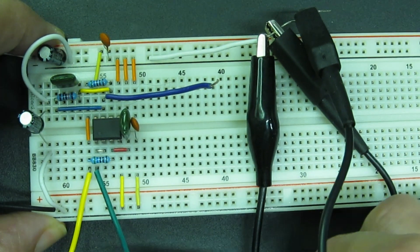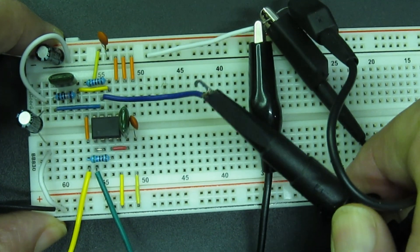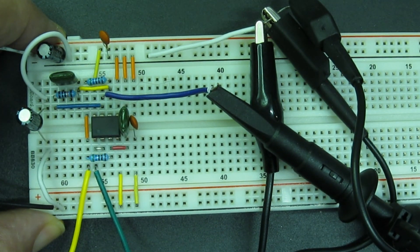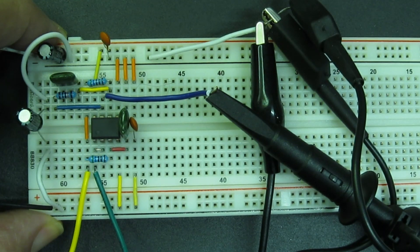I can then move my scope probe and capture the plot of the other circuit. Now we can compare the curves.